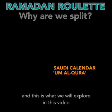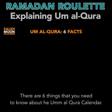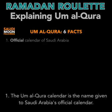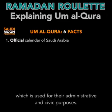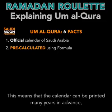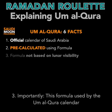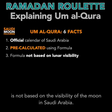So, what is the Ummul Qura calendar? There are six things you need to know. First, the Ummul Qura calendar is the name given to Saudi Arabia's official calendar, which is used for administrative and civic purposes. Second, the Ummul Qura calendar is calculated based on a formula, meaning the calendar can be printed many years in advance, which is helpful for Saudi Arabia for planning and administration purposes. Third, and importantly, this formula used by the Ummul Qura calendar is not based on the visibility of the moon in Saudi Arabia.